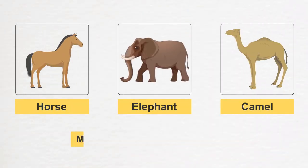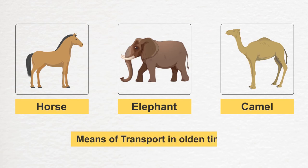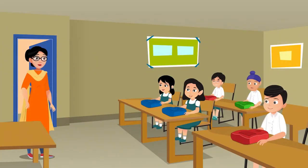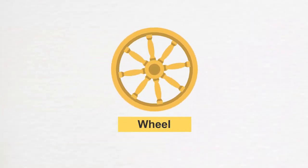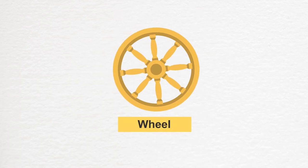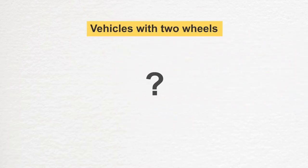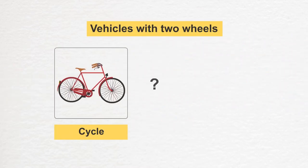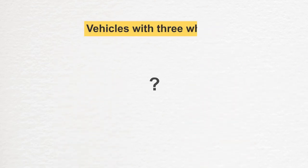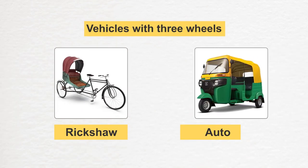It would take a long time even to cover short distances, so human beings used animals as means of transport. They rode on horses, elephants, and camels to cover distances. These animals are still used to this day. As civilization progressed, new vehicles were invented. The first and very important invention was the wheel.